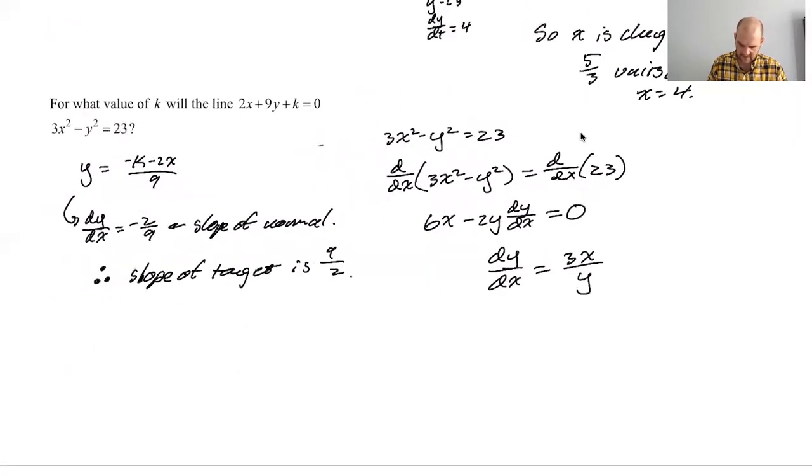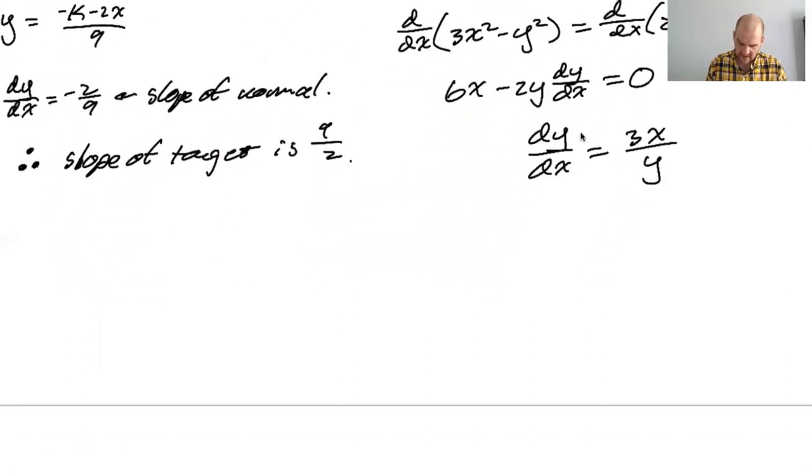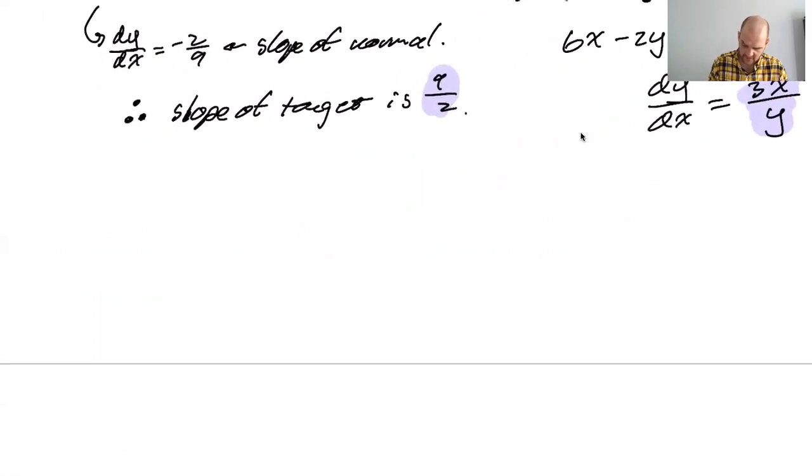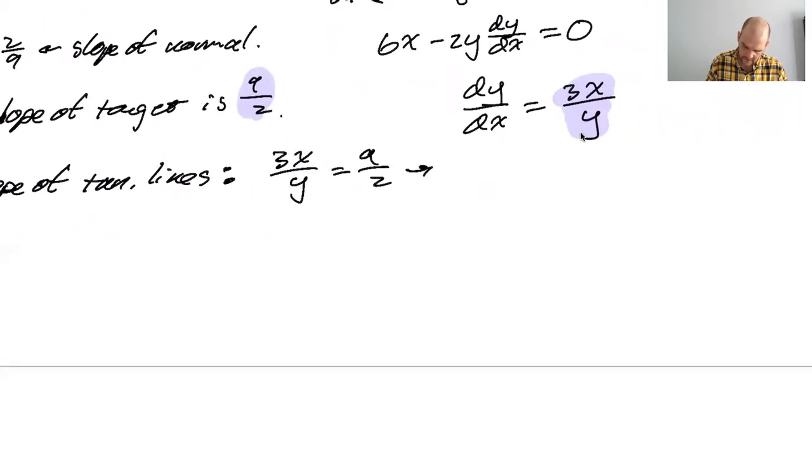And if I divide both sides by dx dt, I get dy dt over dx dt is dy dx. And then on the other side, I'll get 6x over 2y. So I think I'm going to get 3x over y when I find dy dx, but I'm going to do it anyway. So 6x minus 2y dy dx is 0. So dy dx as predicted is 6x over negative 2y is 3x over y. So that's the slope of the tangent line.